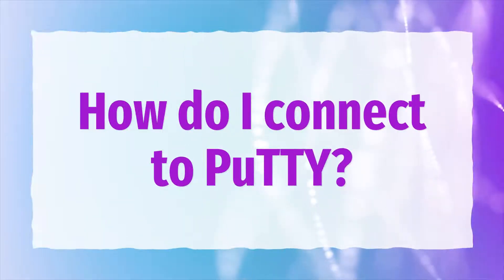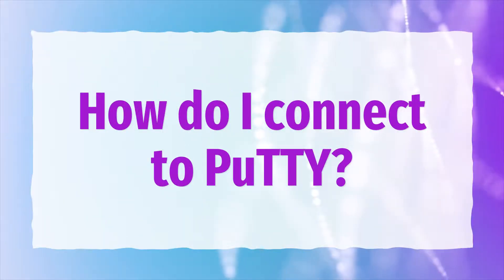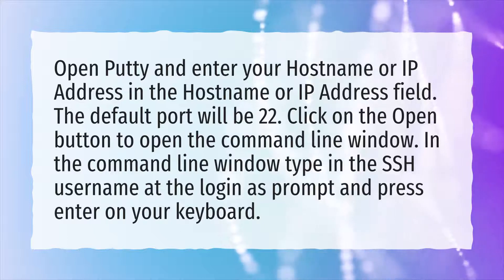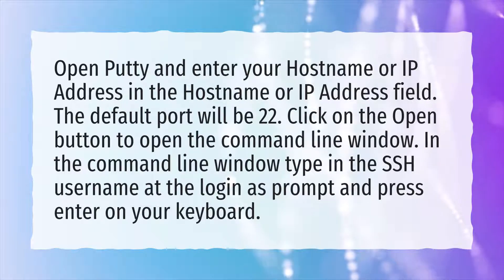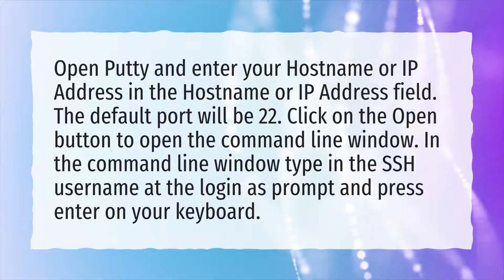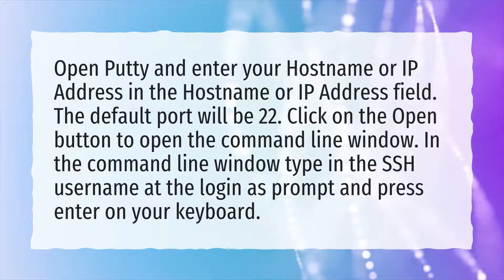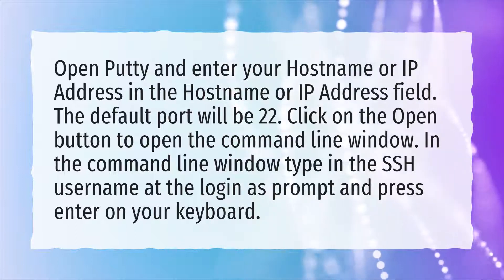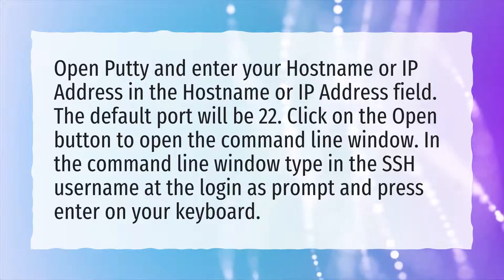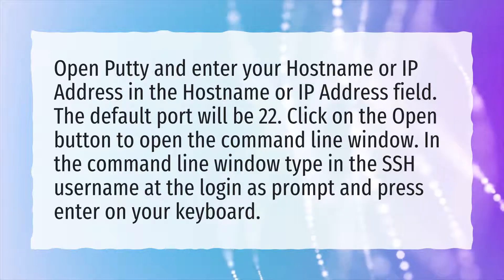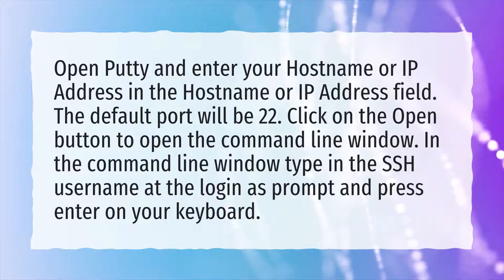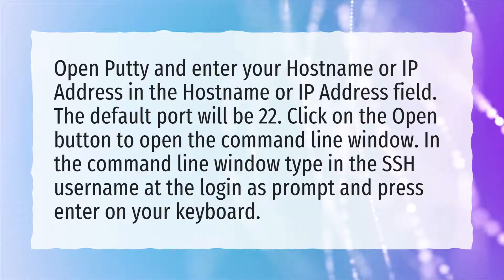How do I connect to PuTTY? Open PuTTY and enter your hostname or IP address in the hostname or IP address field. The default port will be 22. Click on the open button to open the command line window. In the command line window, type in the SSH username at the login as prompt and press enter on your keyboard.